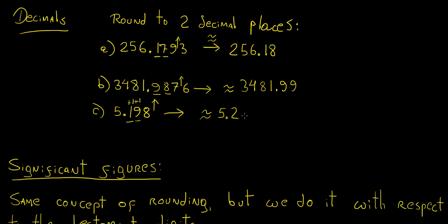There's a small issue here — we said we wanted to round to two decimal places, so we should have two decimals. The second decimal is just 0, but we should write it explicitly as 5.20. It doesn't change the value, but it keeps consistency when expressing a list of numbers all rounded to two decimal places.